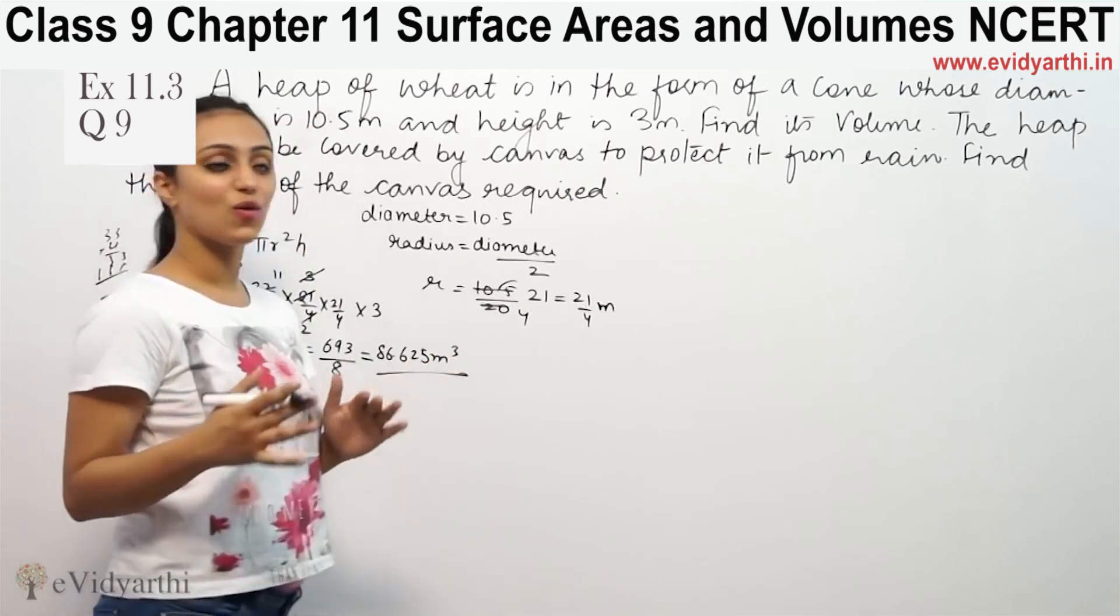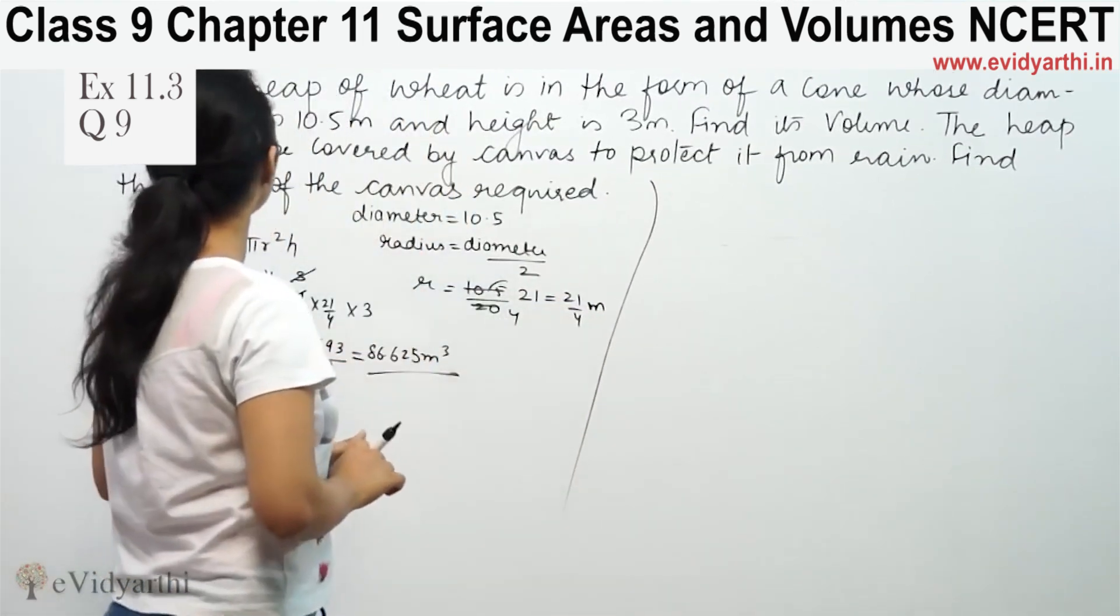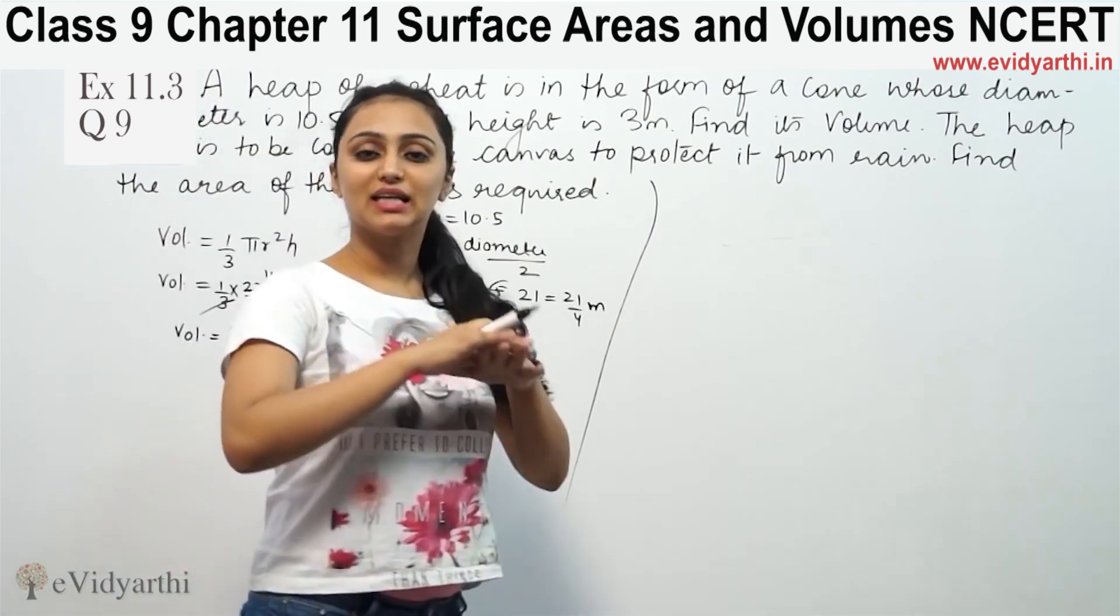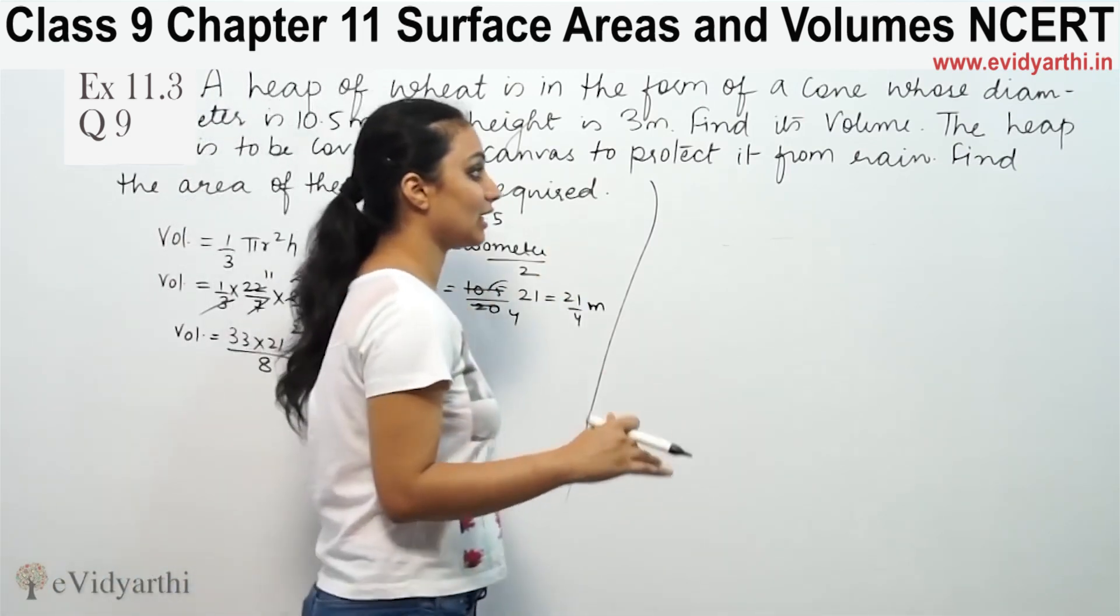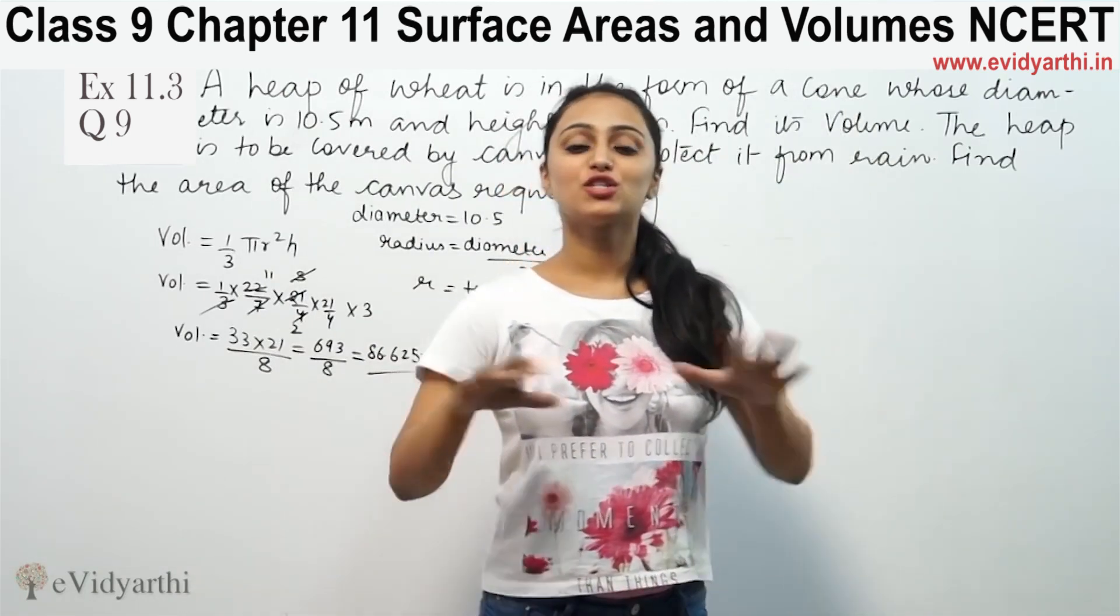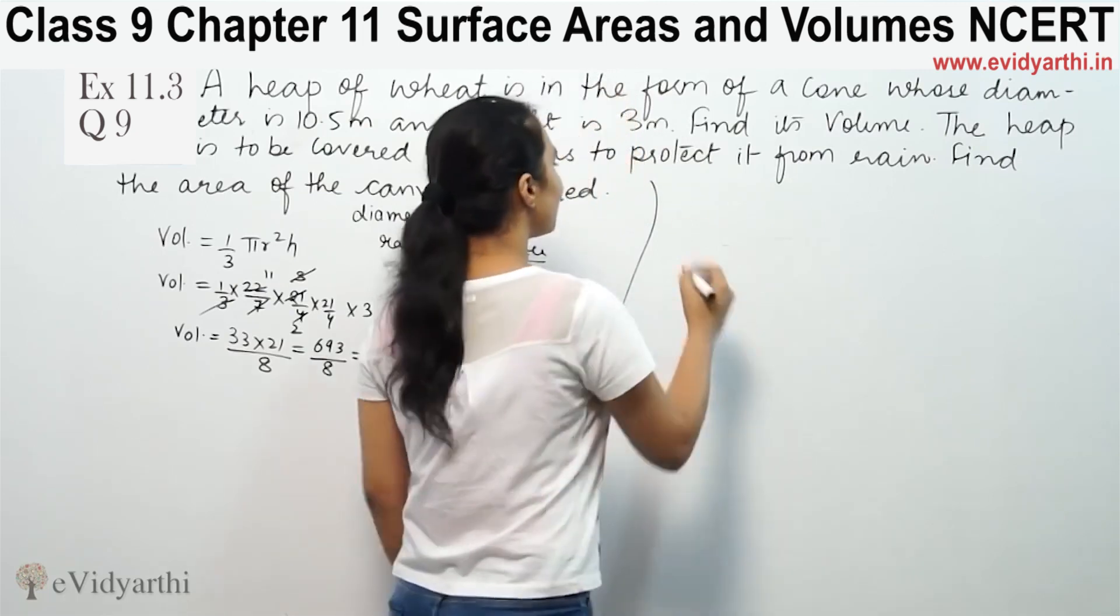The heap is to be covered by canvas to protect it from rain. Find the area of canvas required. Canvas is on top, not on the bottom, so the base is not included. We need the curved surface area.